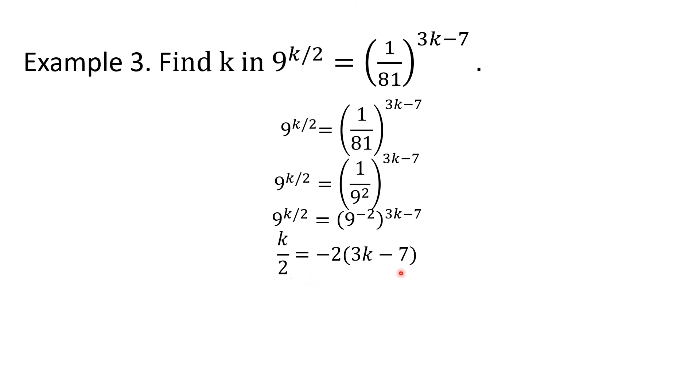So k over 2 times 2 is k. And when I multiply this part by 2, it will become negative 4 times this binomial. And then by distributive property, this will become k equals negative 12k from negative 4 times 3k, and negative 4 times negative 7 is positive 28.